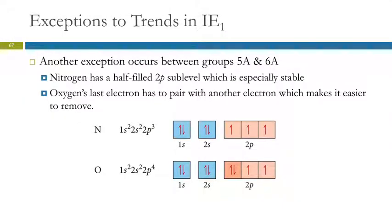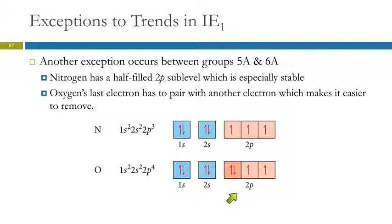Another exception occurs between groups 5A and 6A: nitrogen versus oxygen. Nitrogen has a half-filled 2p sublevel, which is extra stable. Oxygen has one doubly-occupied 2p orbital; removing one electron from that paired orbital gives a half-filled level, which is more stable. So it's actually easier to remove an electron from oxygen than from nitrogen.